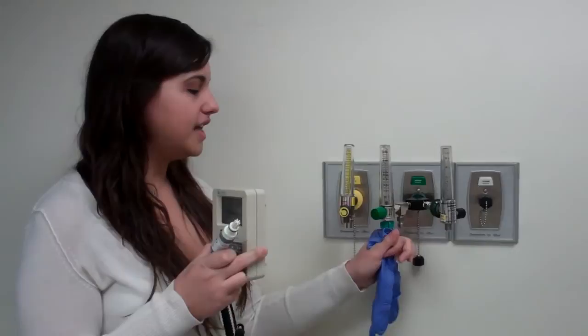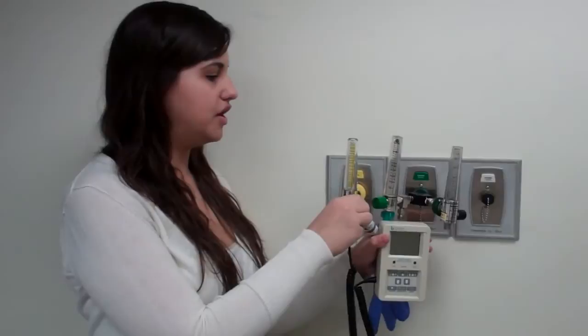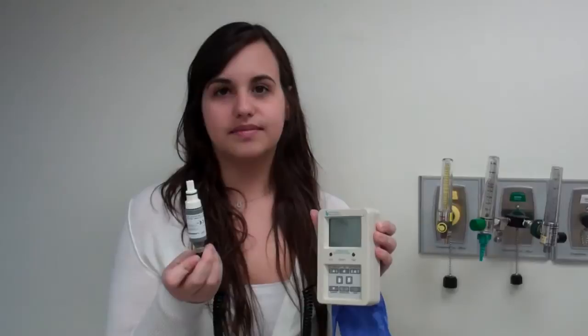You attach a glove to it, you put it to flush in order to get 100%, and you put this in here, and you wait for it to get to 100%. Once you get 100%, you're going to put it up just to the air and get it back down to 21%, and that would be a two point calibration.